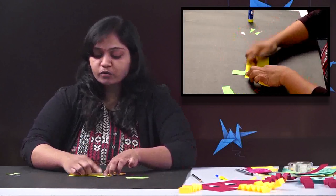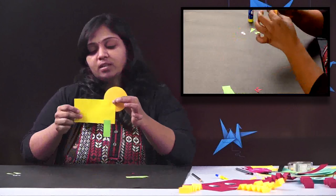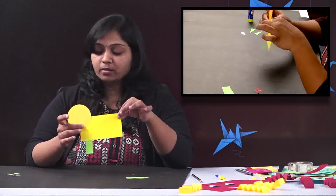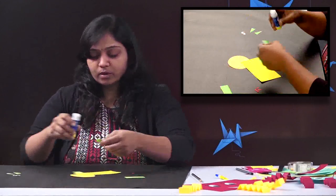You can see this is how we are going to stick from behind, and in the front the circle will be there. All four you have to stick here.